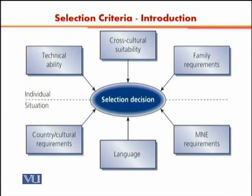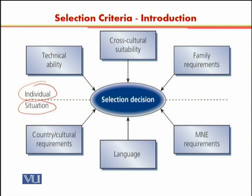According to this model, the selection decision is based on two types of factors. One type is individual factors and the second type is situational factors. The individual factors are concerned with the person who is being selected — you will be looking at the individual capability of the person. The number one factor on the individual factors side is technical ability, which is the skill set required to fulfill the technical requirements of the job.